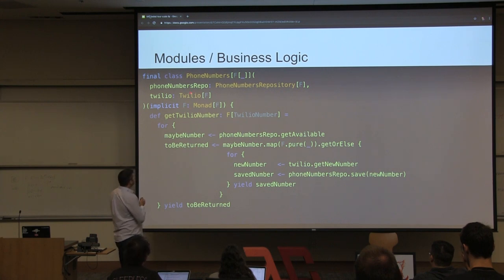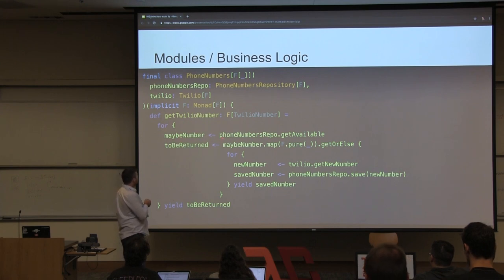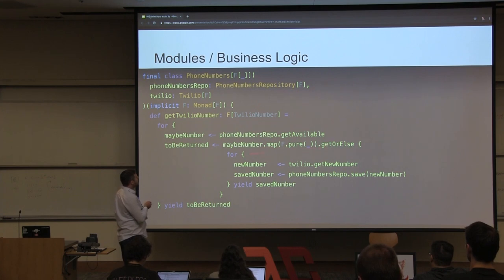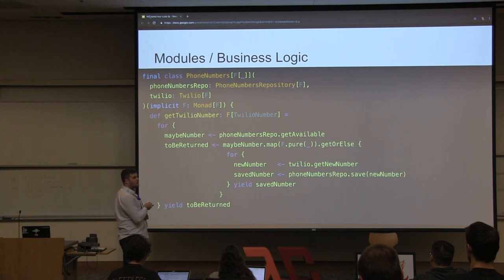Now I have access to all of the functions we defined in that trait. I need a phone number, so I'll ask the phone numbers repository for it. It might give me back a number — if it does, I'll do something with it; if not, I'll use Twilio to buy a new number, save it into the database, and then return the phone number.